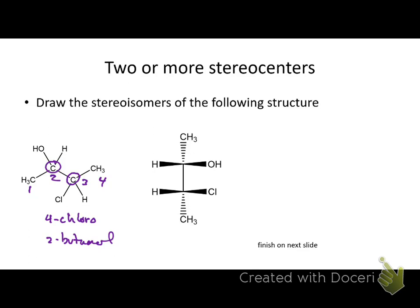Fischer, the guy who used this technique, just drew lines without hatches and wedges — he assumed you would assume that. So when you do this kind of drawing, you have your two stereocenters drawn as crosses. I won't be doing Fischers until chapter 16 or so, when we start talking about carbohydrates with six stereocenters. That's when it becomes important to find an efficient way to draw them. Fischer is the guy who figured out the structures of all the sugars.